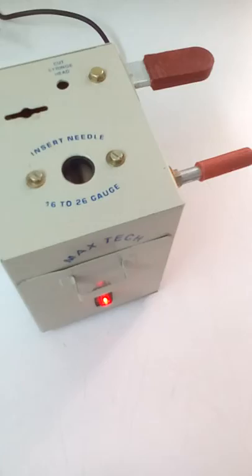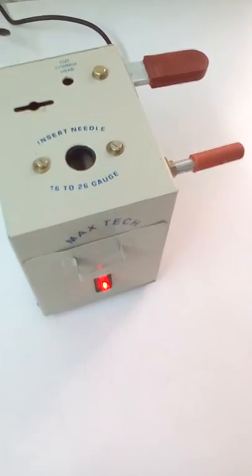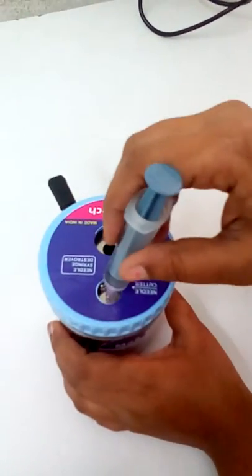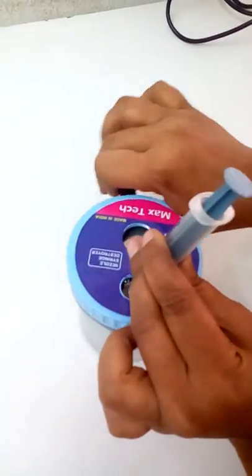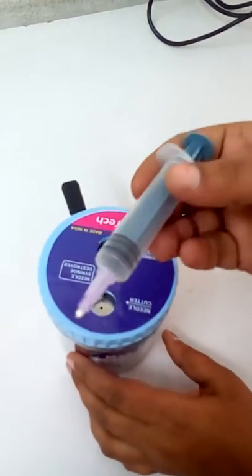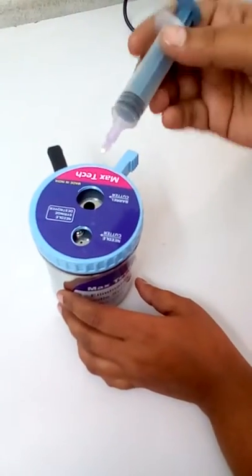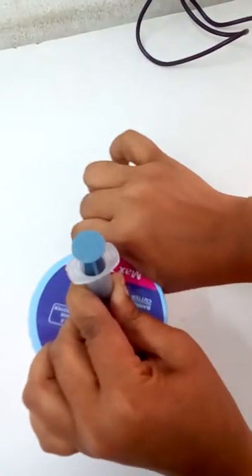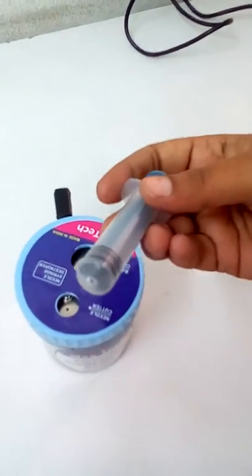We also have a manual needle destroyer, Max Tech M. The needle is inserted into the needle hole, the blades with a snap action finish the needle, and in the second hole the nozzle gets cut.